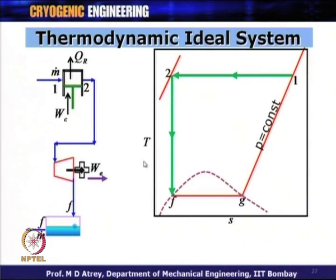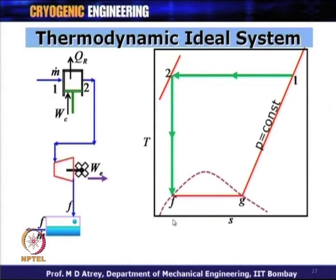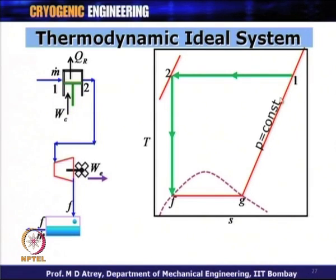If we represent this system on a T-S diagram: there are two pressure lines. Process 1 to 2 is isothermal compression at constant temperature. After pressurization at point 2, the gas is expanded isentropically — entropy remains constant — and after expansion hits the saturated liquid curve at point F. Whatever gas is compressed completely gets liquefied at this point.